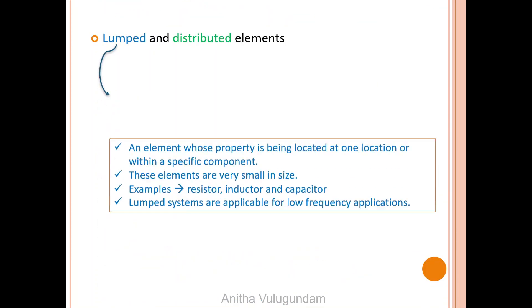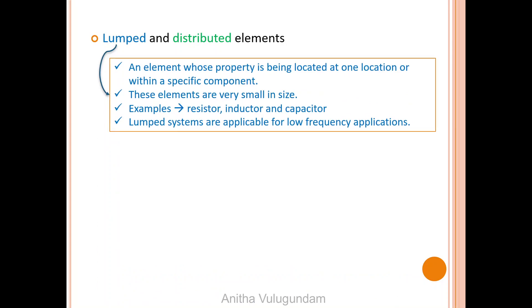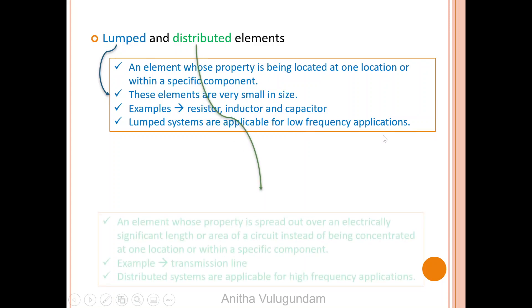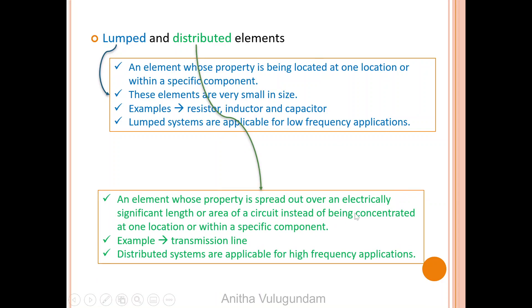A lumped element is an element whose property is located at one location or within a specific component. These elements are very small in size. Examples are resistors, inductors, and capacitors. Lumped systems are applicable only for low-frequency applications. Distributed elements are elements whose property is spread out over an electrically significant length or area of a circuit instead of being concentrated at one location. Example of a distributed element is a transmission line, which has distributed resistance, inductance, and capacitance along its length. Distributed systems are applicable for high-frequency applications.